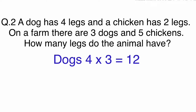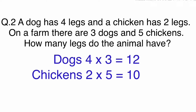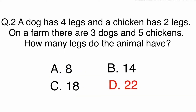A dog has 4 legs and there are 3 dogs on the farm, so 4 times 3 equals 12. Chickens have 2 legs and there are 5 of them on the farm: 2 times 5 equals 10. If you add 12 and 10 together, the answer is 22. The answer is D. 22.